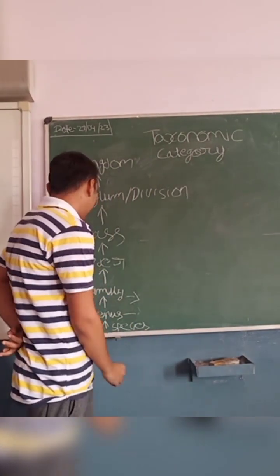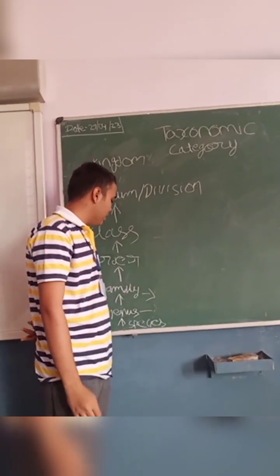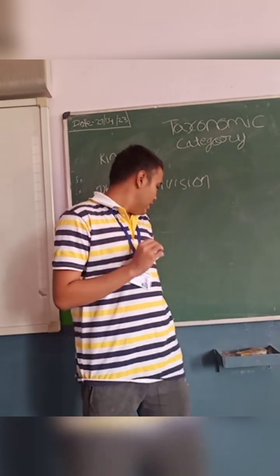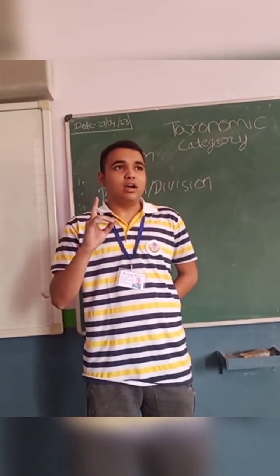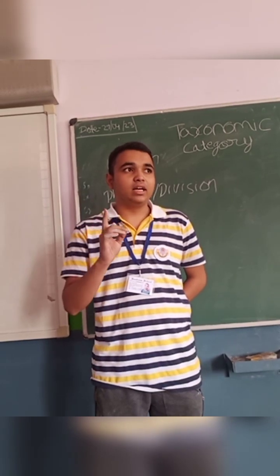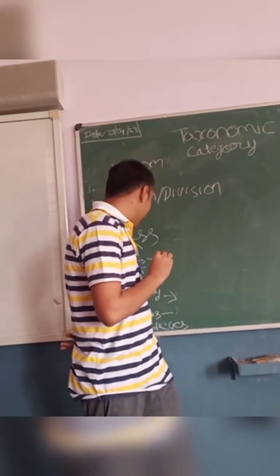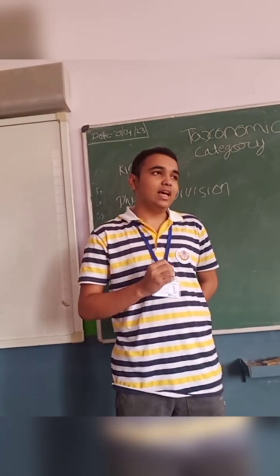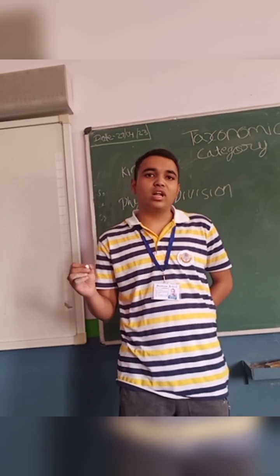Now there is order. A group of related families is known as order. For example, if we take family Solanaceae and Convolvulaceae then the order is called Polymoniales. The order is strongly based on floral characters.